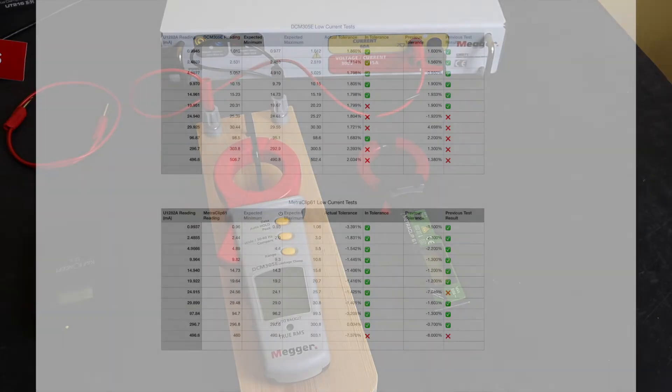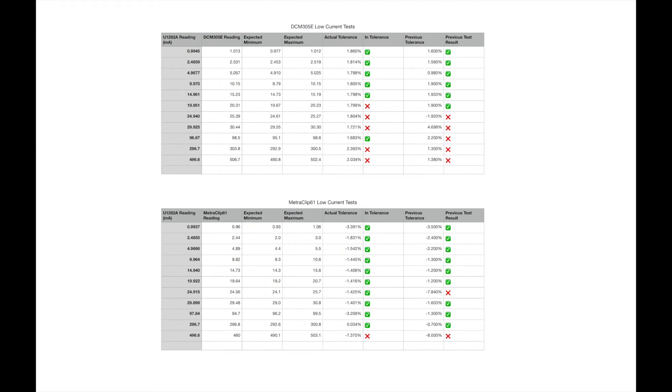Okay, so here are the two tables of test results. The tests that I've done this time around are all in the left-hand columns with the actual reading I took from the U1282A as the cross reference, and then the reading from the instrument. In the in-tolerance column, you can see where the reading is actually in tolerance or out of tolerance.